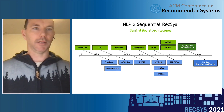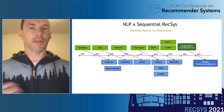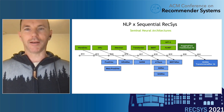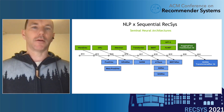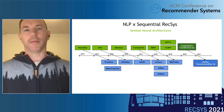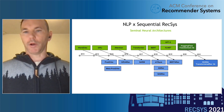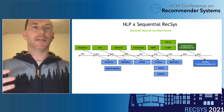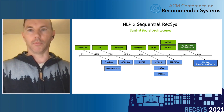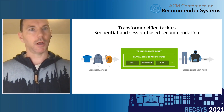We observed a pattern: Word2Vec led to Prod2Vec, GRU led to GRU4Rec, attention led to NARM, and BERT led to BERT4Rec. We figured there may be an XLNet for Rec or GPT for Rec coming. There's roughly a thousand times more NLP research happening than in the RecSys space, and ideas transfer over. We wanted to create a library enabling easy research, experimentation, and real-world practitioner use for sequential and session-based recommendation.